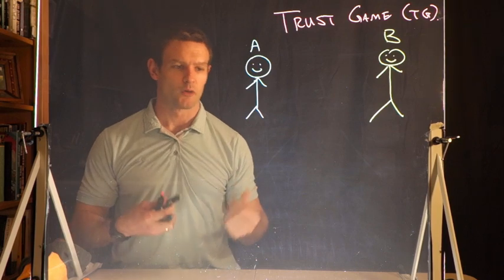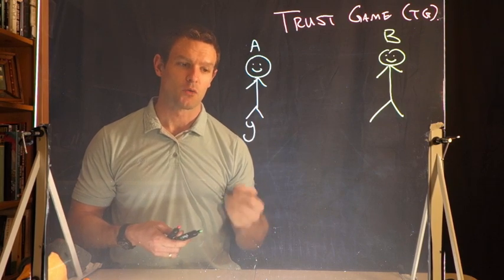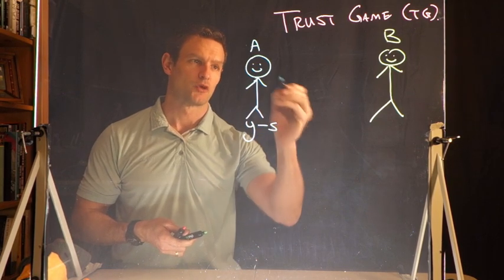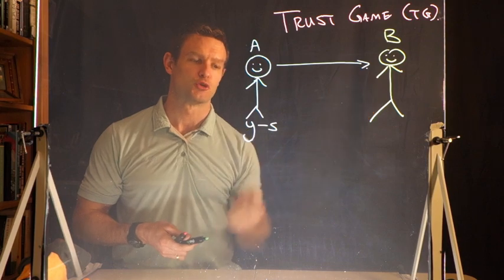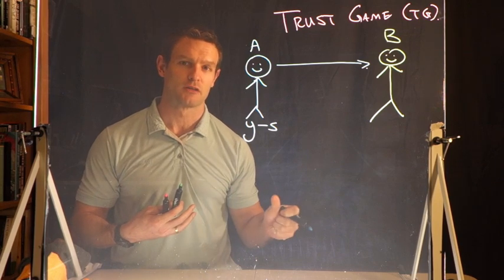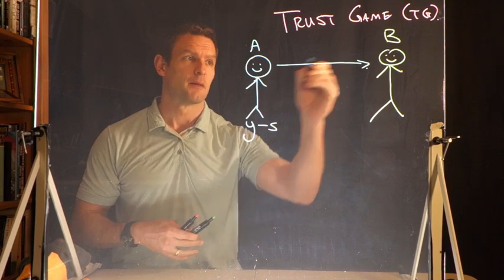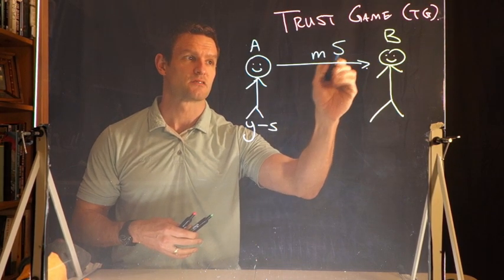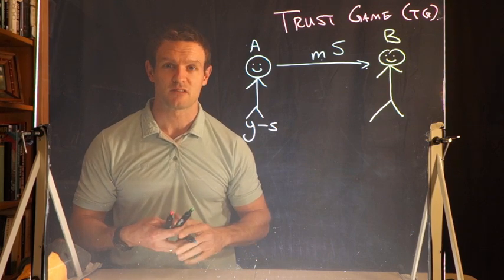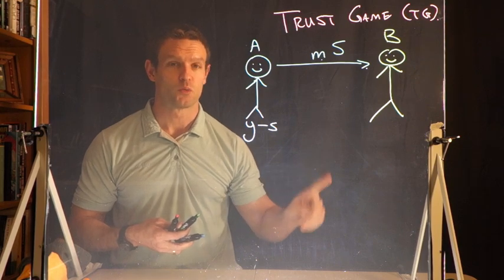Player A is given some endowment Y. With that endowment, they can send some amount S to player B. Crucially, B receives M times S, where M is a multiplier. Typically, M equals 3. For example, if A starts with $10 and sends $5 to player B, then player B gets $15.